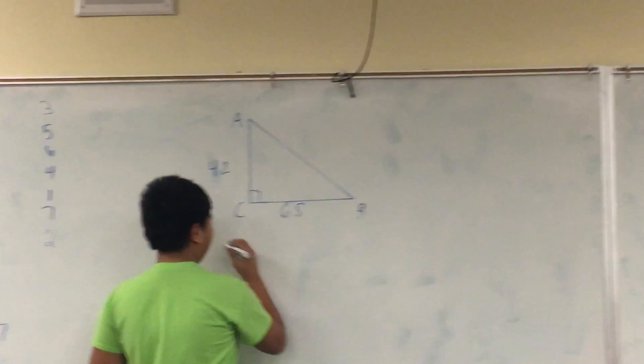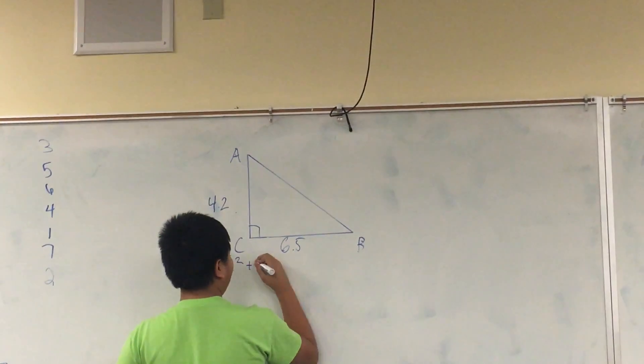We have hot news. Use Pythagorean theorem. A squared plus B squared equals C squared.